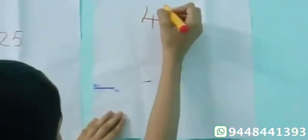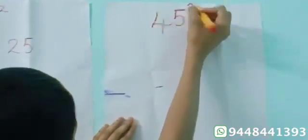So let us take the second number as 45. Let's find 45 square. We know that 45 square is 45 into 45.